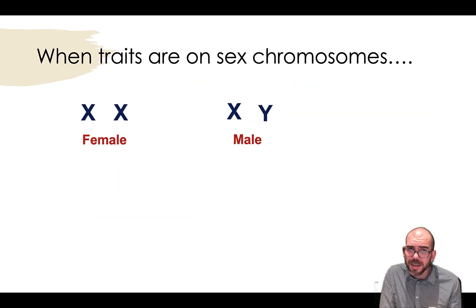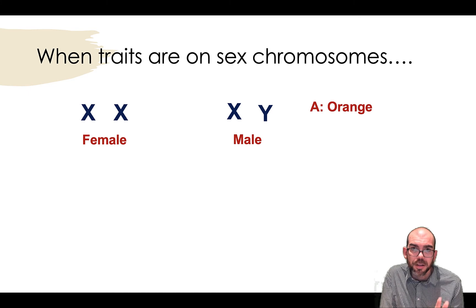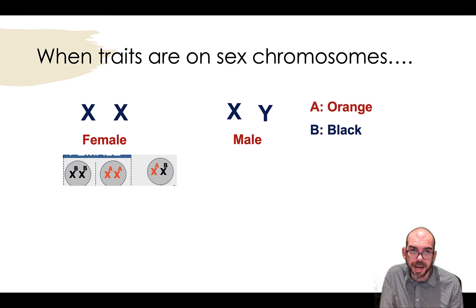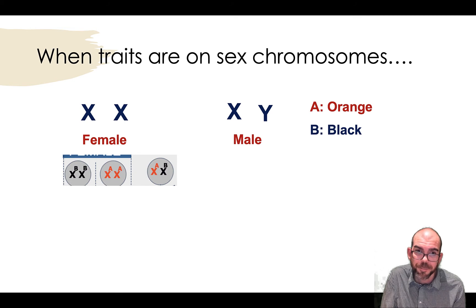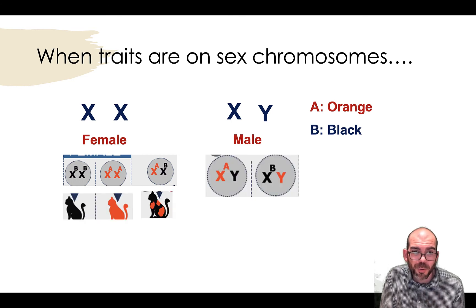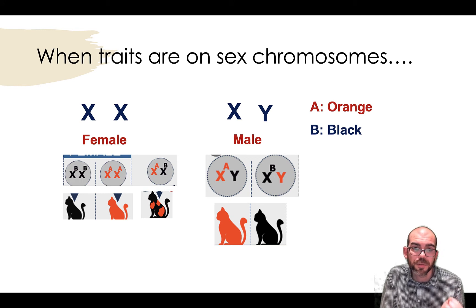It turns out that traits can be on the sex chromosomes of an organism instead of the other autosomal chromosomes. Females typically have XX sex chromosomes, and males typically have XY. Let's say A is orange and B is black. These are the possible genotype combinations for the female: she could be homozygous for B and be black, homozygous for A and be orange, or heterozygous for both and express both at the same time. The thing is, traits like this are only carried on the X chromosome, and males only have one X. So for the male, they'll either have an X that's orange or an X with a B and be black — there's no possibility for the male to be heterozygous.